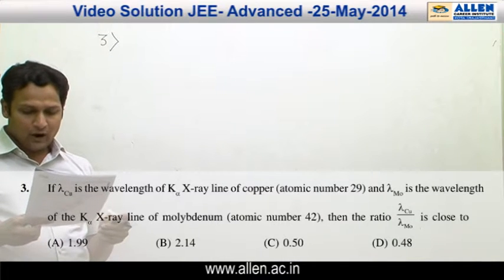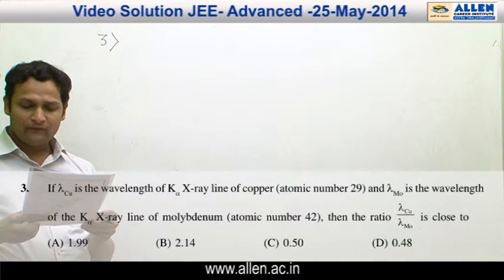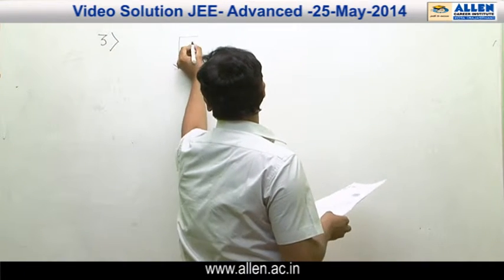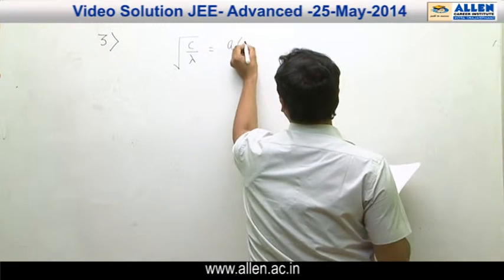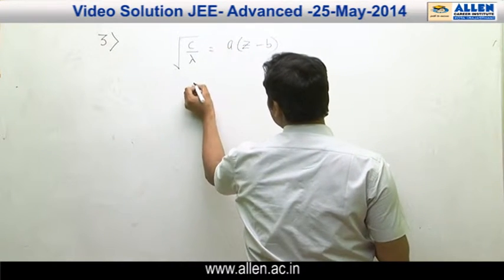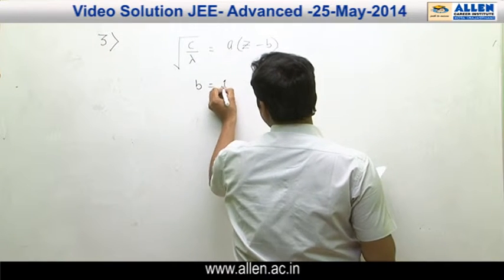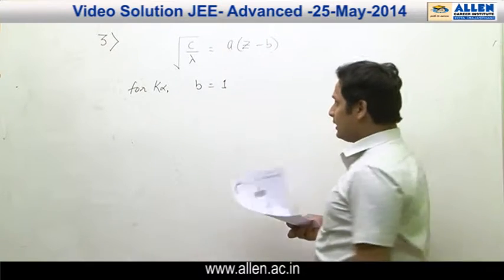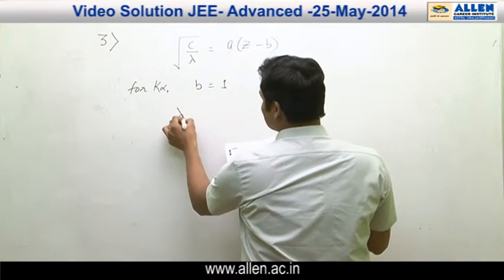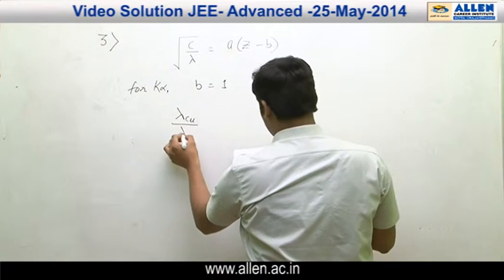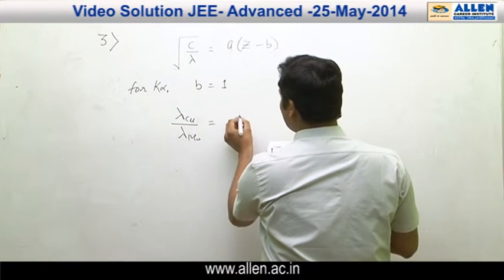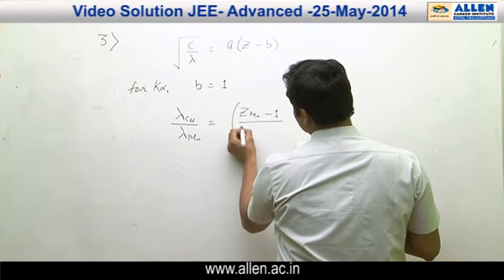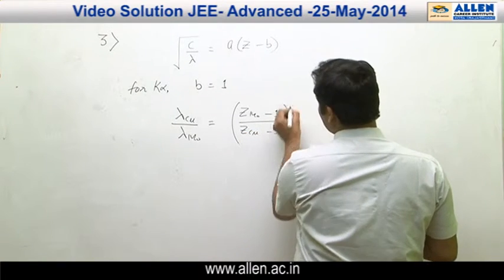Question number 3: we have to find the ratio of wavelengths of copper and molybdenum. Using Moseley's law, root of C divided by lambda equals A(Z minus B). For K-alpha, B equals 1. So the ratio lambda_Cu divided by lambda_Mo equals (Z_Mo minus 1) divided by (Z_Cu minus 1), all squared.